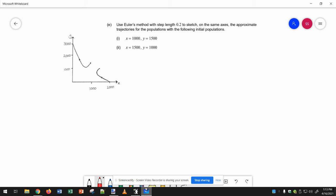So in fifth period, we managed to figure out why this graph is the way it is. It says use Euler's method with step length 0.2, and it gives us two different initial conditions.